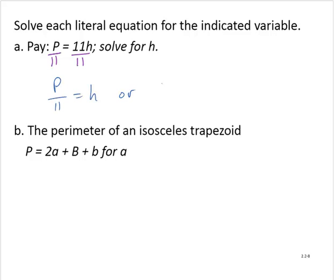And again, if we want to have the h variable first, h equals P over 11.